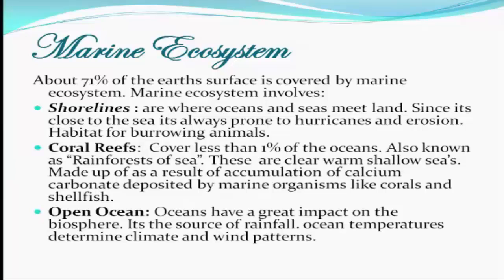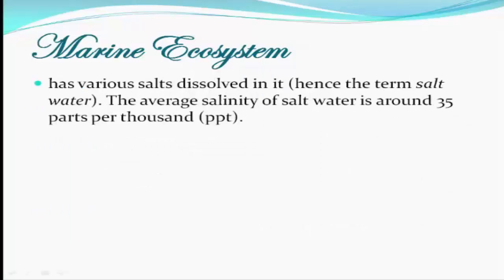Next, we have the open ocean. Oceans have a great impact on the biosphere and are the source of rainfall. Ocean temperatures determine climate and wind patterns. Also, marine ecosystems have salt dissolved in them, with an average salinity of around 35 parts per thousand.